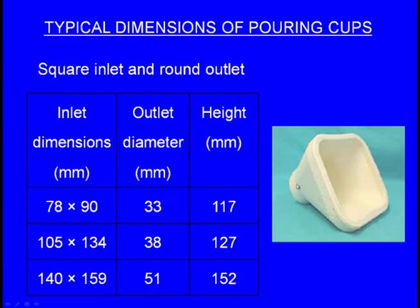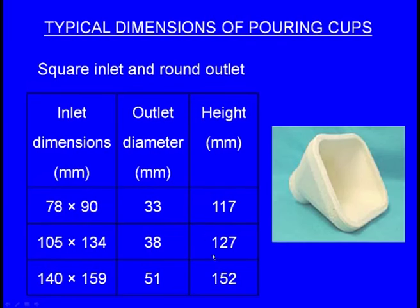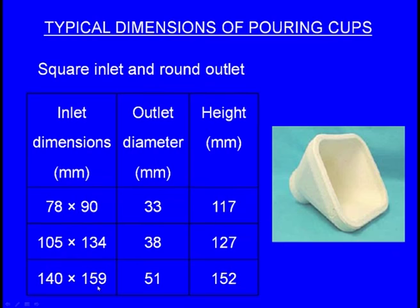There is another type with a square inlet and round outlet. Dimensions: inlet 78×90 mm, outlet diameter 33 mm, height 117 mm. Another: inlet 105×134 mm, outlet diameter 38 mm, height 127 mm. Another: inlet 140×159 mm, outlet diameter 51 mm, height 152 mm. We have completed the pouring cup — one has to choose either manually cut or readymade ceramic pouring cups.